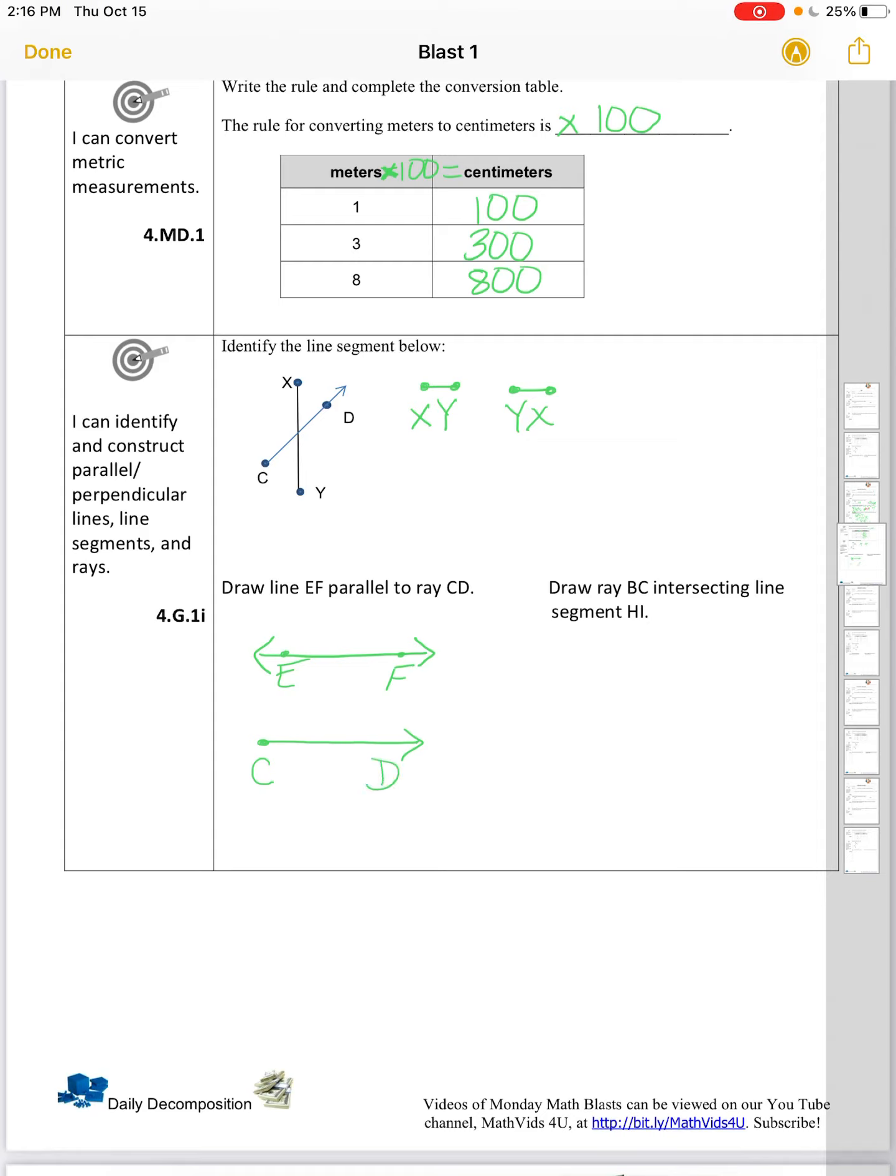And then we move in the direction of the arrow, so that's D. There we go. We have line E, F, parallel, meaning never going to touch, ray C, D.